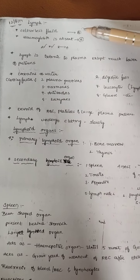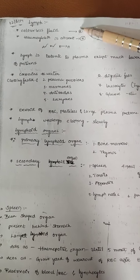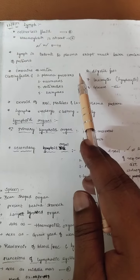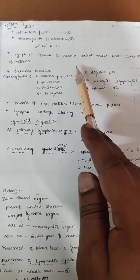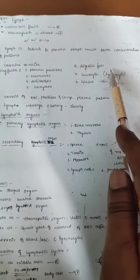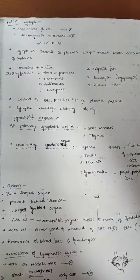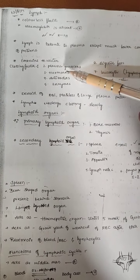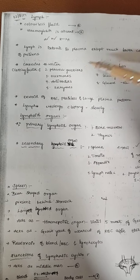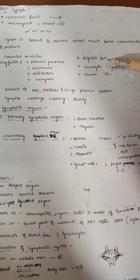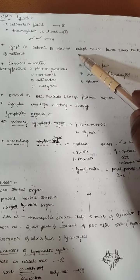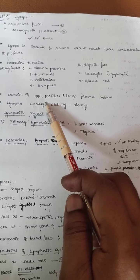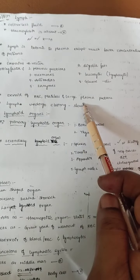Lymph is basically a colorless fluid because hemoglobin is absent. Lymph is isotonic to plasma — the same contents are present in lymph as in plasma, except at much lower concentration of proteins. It contains water, plasma proteins, hormones, antibodies, enzymes, digested fats, leukocytes, and glucose. It is devoid of RBCs, platelets, and large plasma proteins.